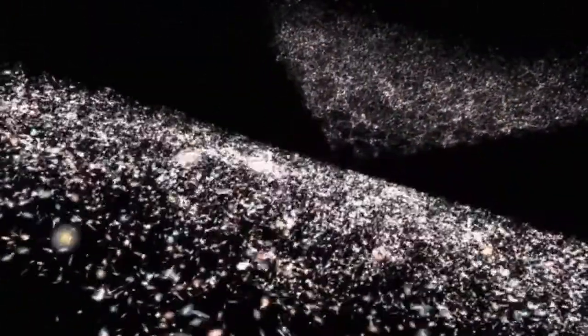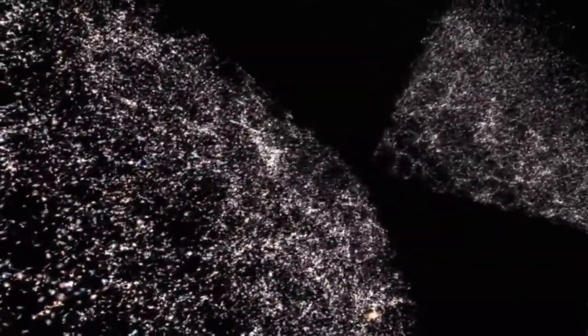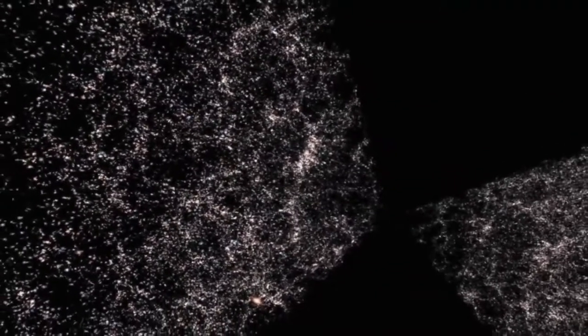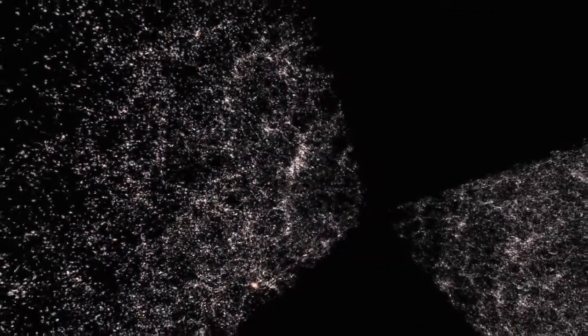What the map shows us is that the galaxies aren't scattered at random across the universe. Galaxies are arranged in this web-like structure where there's lots of galaxies all in one place and then enormous empty space between them. But the big question is, why does it look like this?